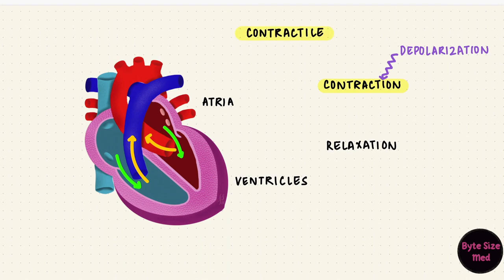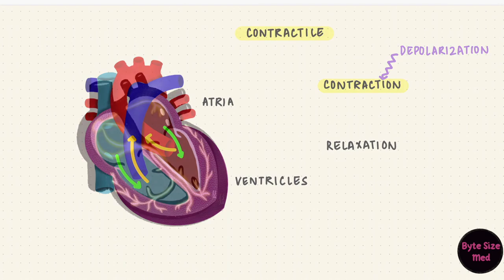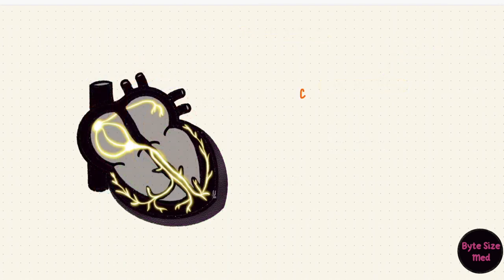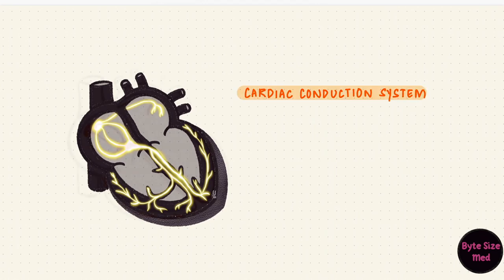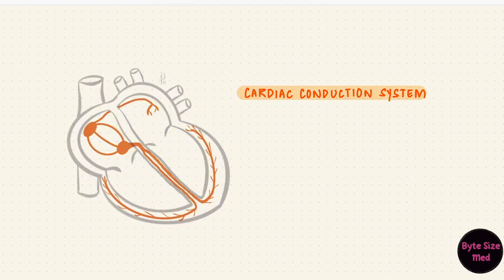The heart is special. It doesn't need to be told to contract because it has specialized muscle cells called conducting cells. These cells are capable of self-excitation, meaning they can generate impulses by themselves. They form the cardiac conduction pathway, which includes four important structures.